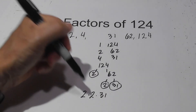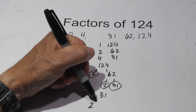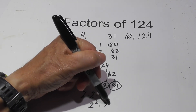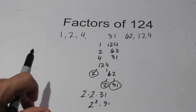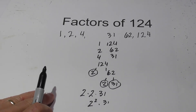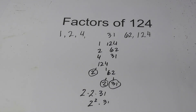You can write that, or you may see it written as 2 squared times 31. I hope that helps with the factors of 123 and 124. Moo Moo Math uploads a new math and science video every day — please subscribe and share.